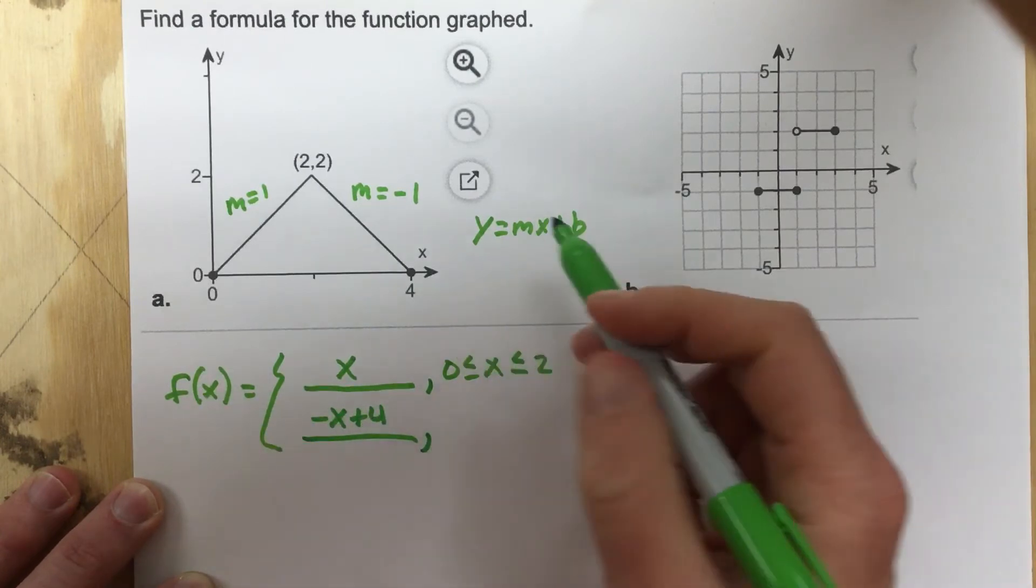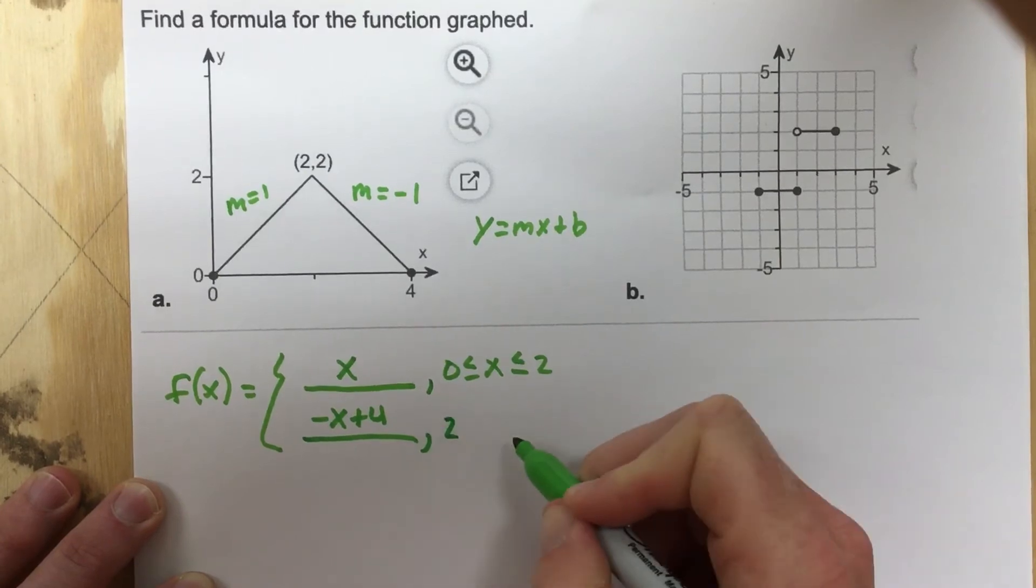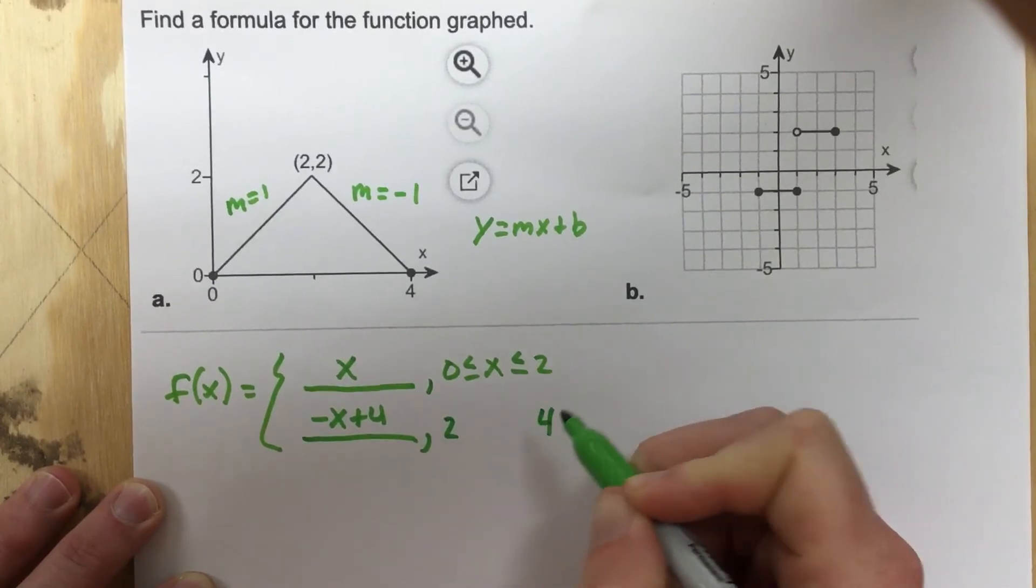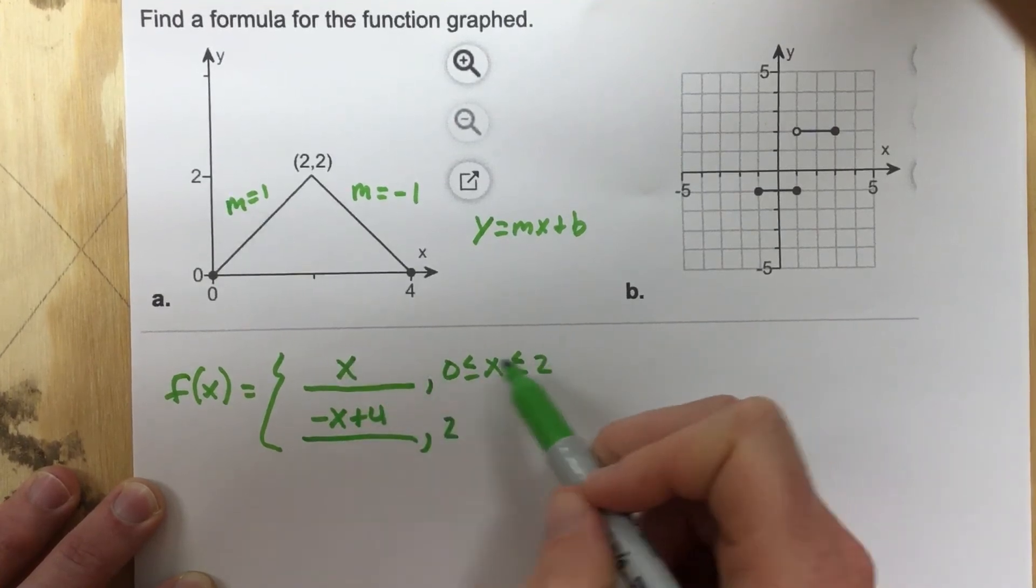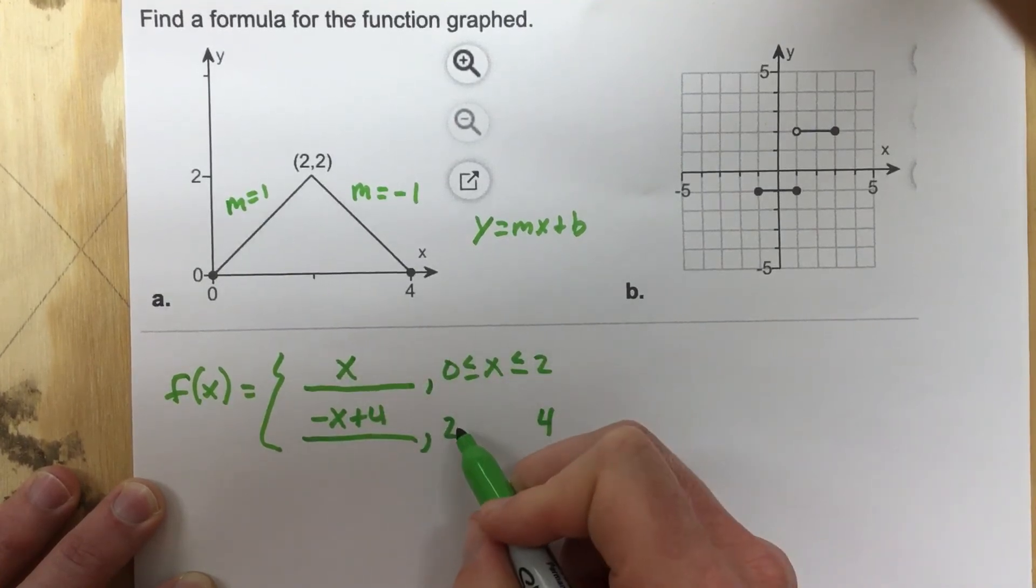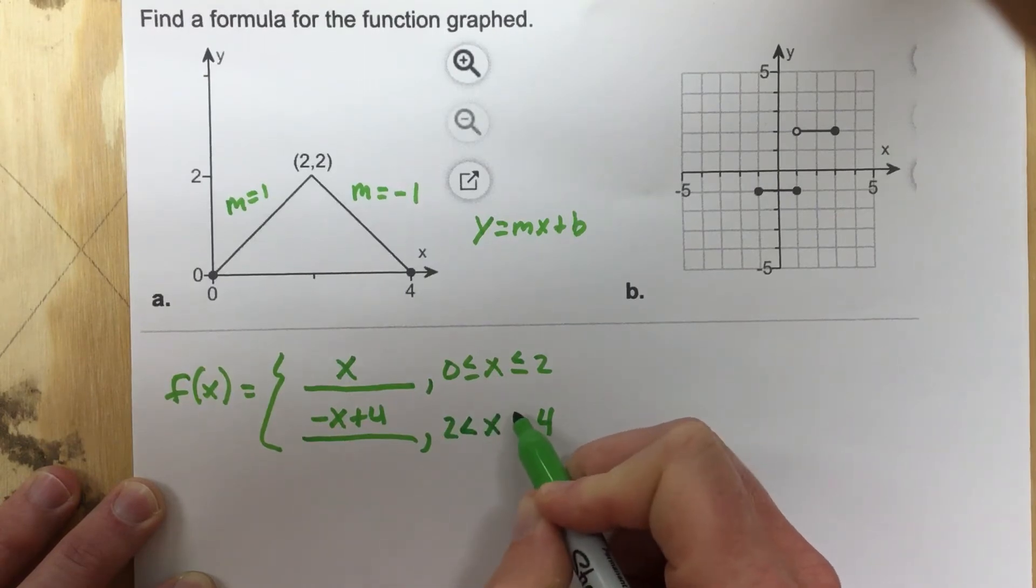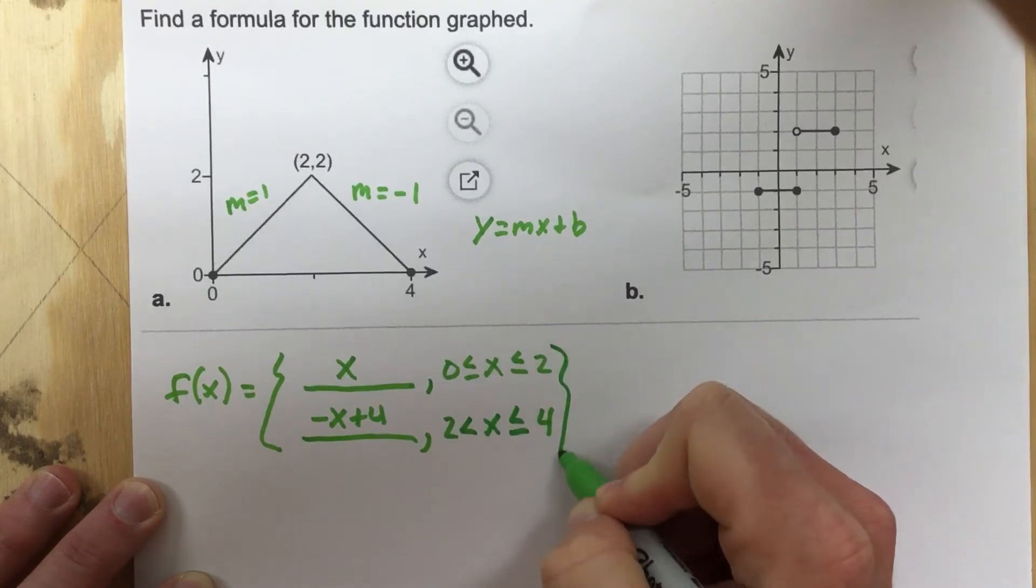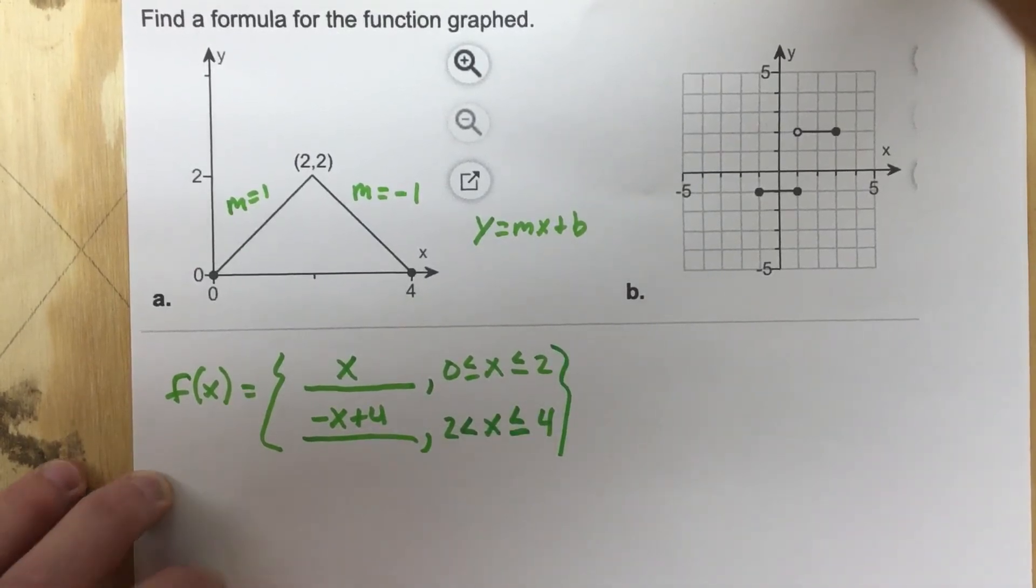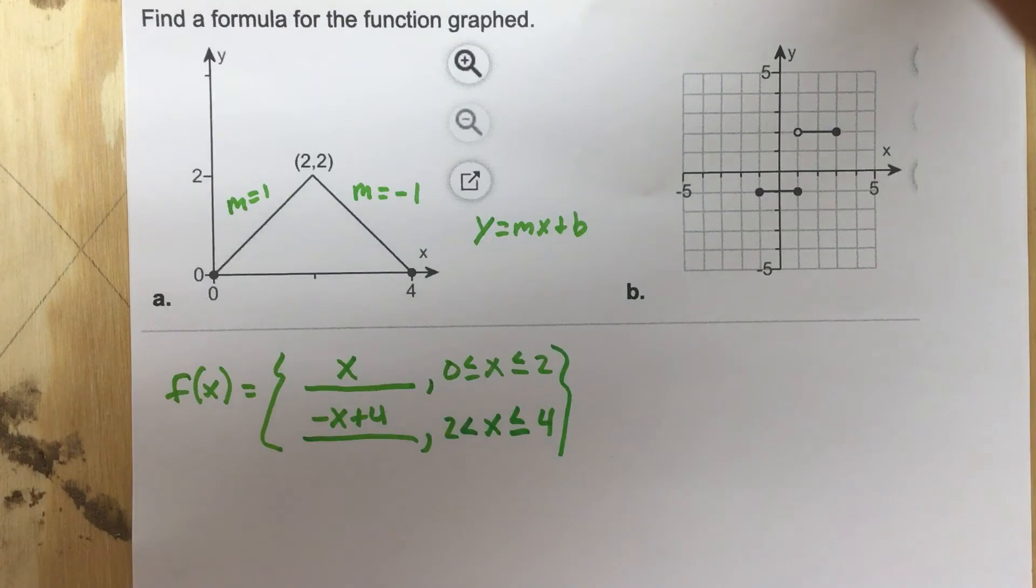And that's going to run from 2 to 4, but here's the issue. We already defined 2 in our top function, so we can't define it in the bottom, so we're going to say 2 is not defined for that function, so less than x, but 4 is defined, less than or equal to 4, and that's the piecewise function for the first function that's in the graph.